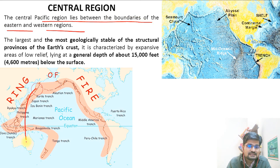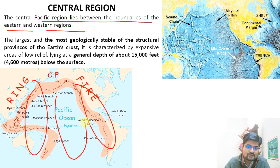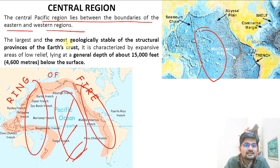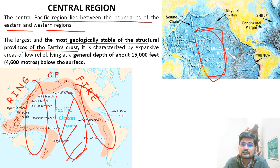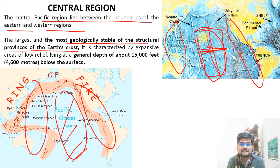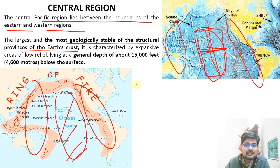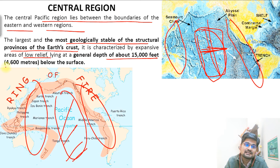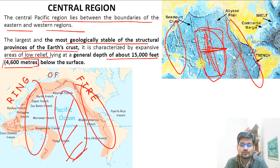The Central Pacific region lies between the eastern and western boundaries. It is the largest and most geologically stable of the structural provinces of the Earth, in contrast to the very active eastern and western zones. It is characterized by expansive areas of low relief — essentially a flat bottom — with a general depth averaging about 15,000 feet or 4,600 meters.